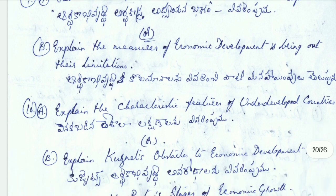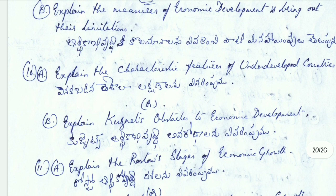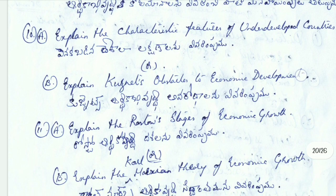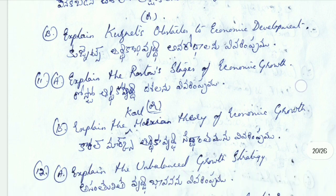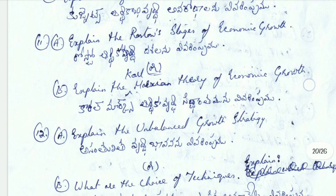B: explain the threats or obstacles to economic development. 11th Aayug: explain the Rostow stages of economic growth. B: explain the Karl Marx theory of economic growth. 12th Aayug: explain the unbalanced growth strategy.